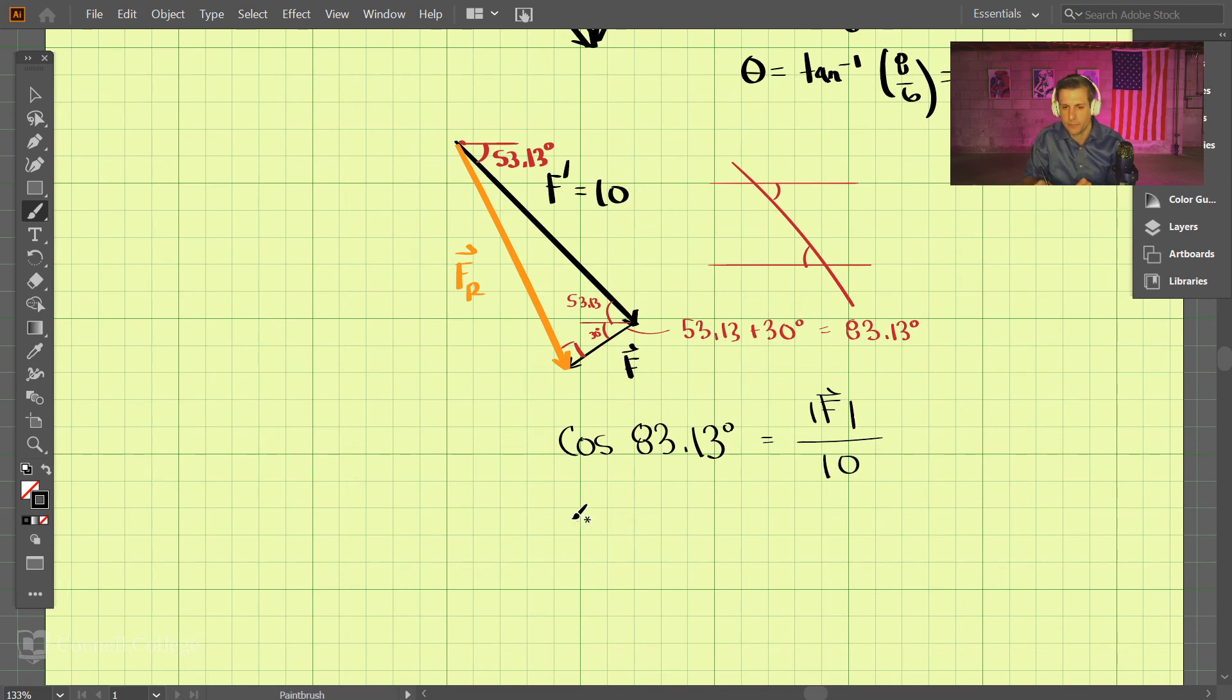And then also we can do the sine of 83.13, and that is equal to the opposite, the magnitude of FR, divided by the hypotenuse, which is 10. So using these two equations here, we solve this side, and then we can just multiply 10 to the other side to come up with the solutions.